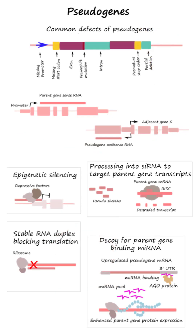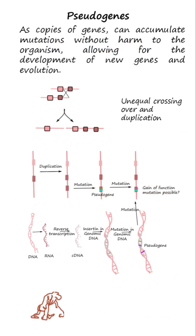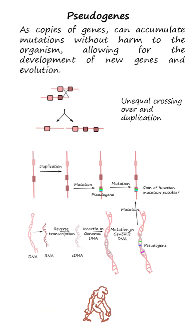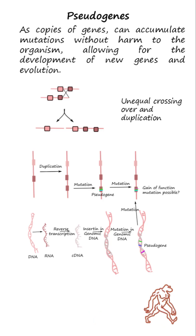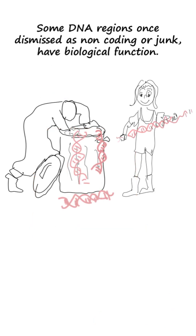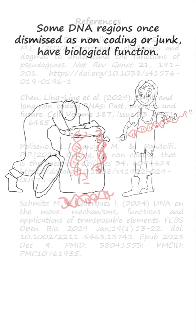There is another category of DNA sequences — pseudogenes — that resemble functional genes. Though initially considered non-functional, some have been found to produce functional proteins while others regulate genes. Also, pseudogenes, as copies of genes, can accumulate mutations without harm to the organism, allowing for the development of new genes and evolution. So some DNA regions, once dismissed as non-coding or junk, have biological function.